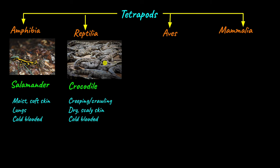Reptilia includes all reptiles like crocodiles and snakes — animals that move in a creeping or crawling manner. This fits because the word Reptilia is derived from the Latin word 'raptare,' which means to creep or crawl. Their skin is dry and covered with scales, and animals like snakes shed their skin as they grow. Reptilia are also cold-blooded organisms.